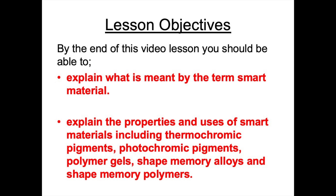Now let's recap the lesson objectives to check you've understood every aspect of this video. You should now be able to explain what is meant by the term smart material. You should also be able to explain the properties and uses of thermochromic pigments, photochromic pigments, polymer gels, shape memory alloys, and shape memory polymers.